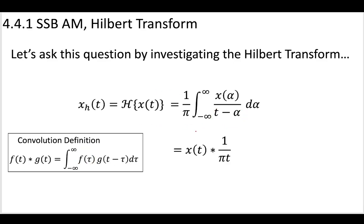We have one function that's a function of tau only, and the other that is a function of the original variable minus tau. So we can see some original function T minus alpha, and another function that's a function of alpha. We're integrating by this modified variable. So basically this looks like a convolution definition — and in fact it is. So our original signal is being convolved with 1 over πt.